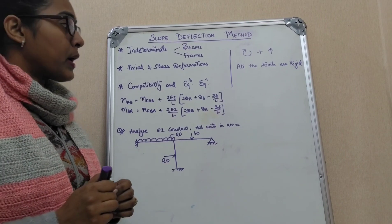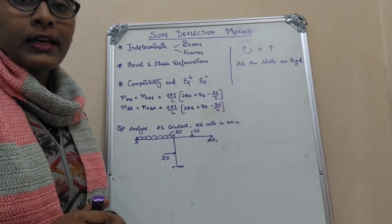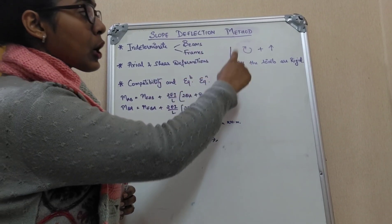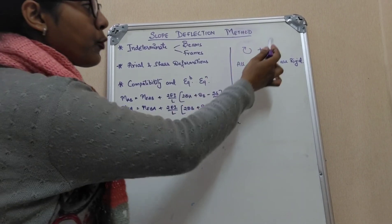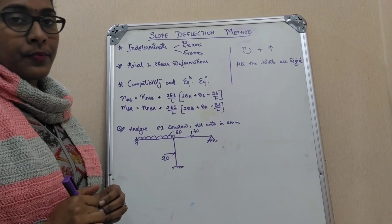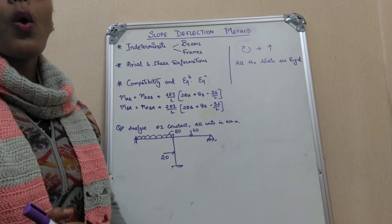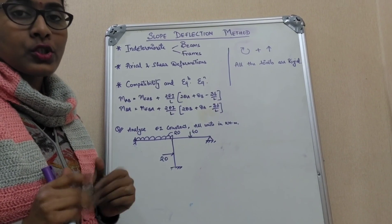The sign conventions we will be using are clockwise moments and upward forces as positive. In this we will be using all the joints as rigid joints.